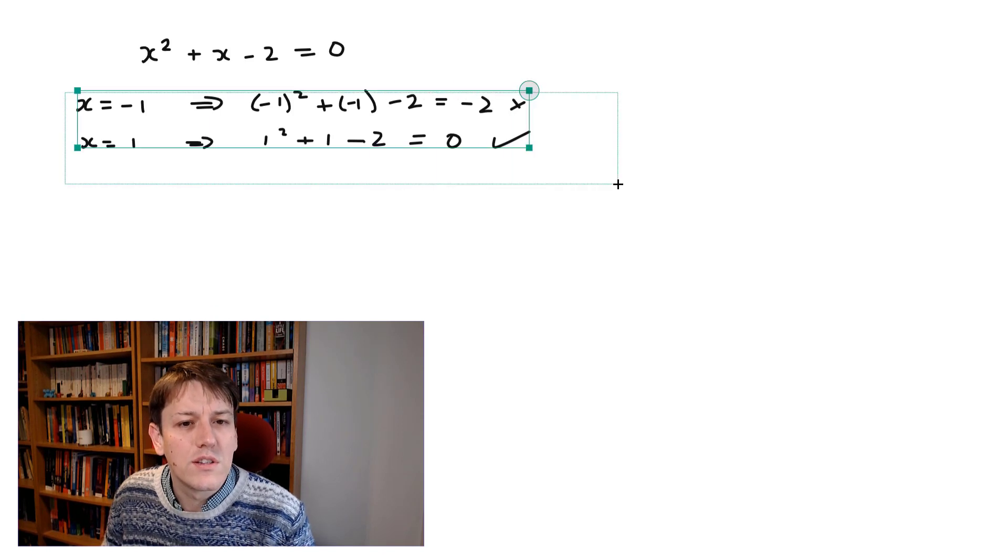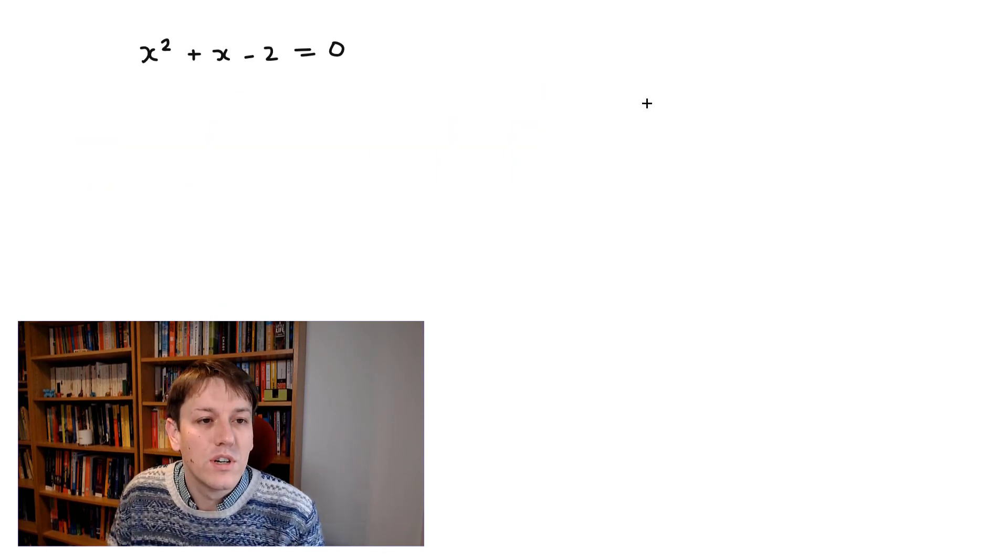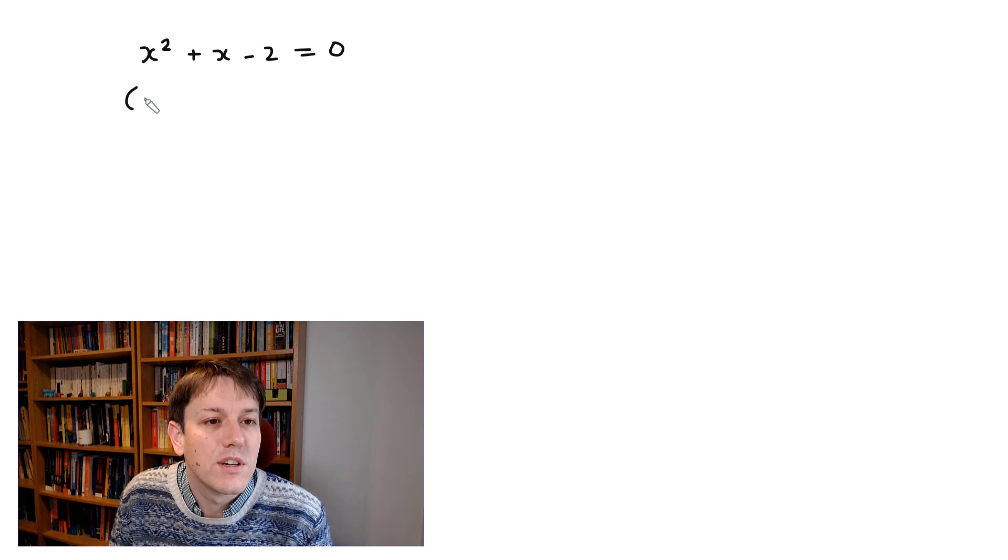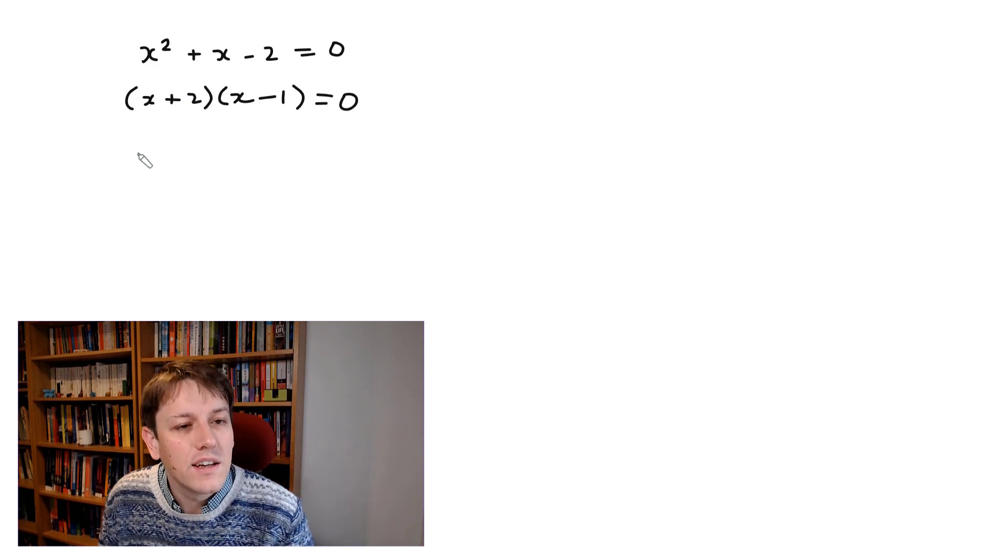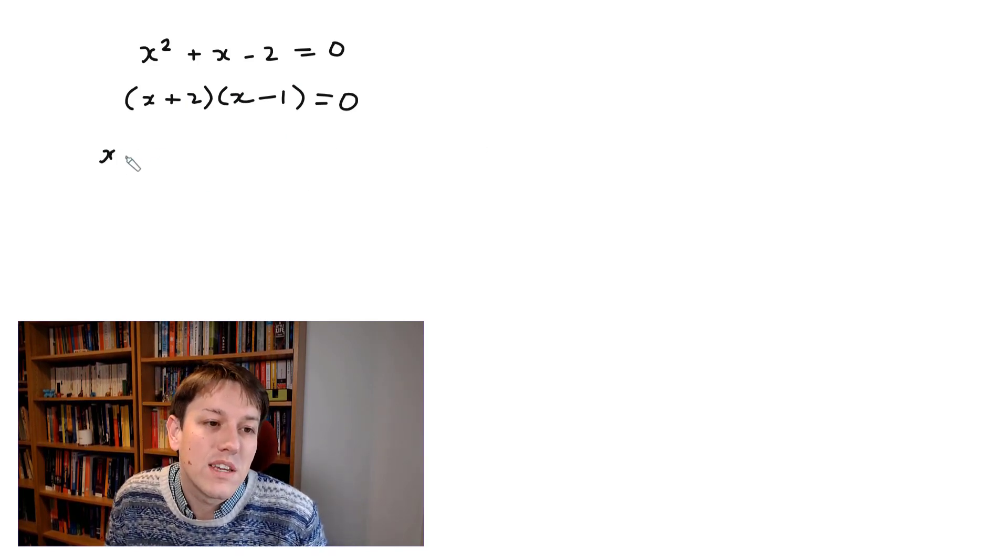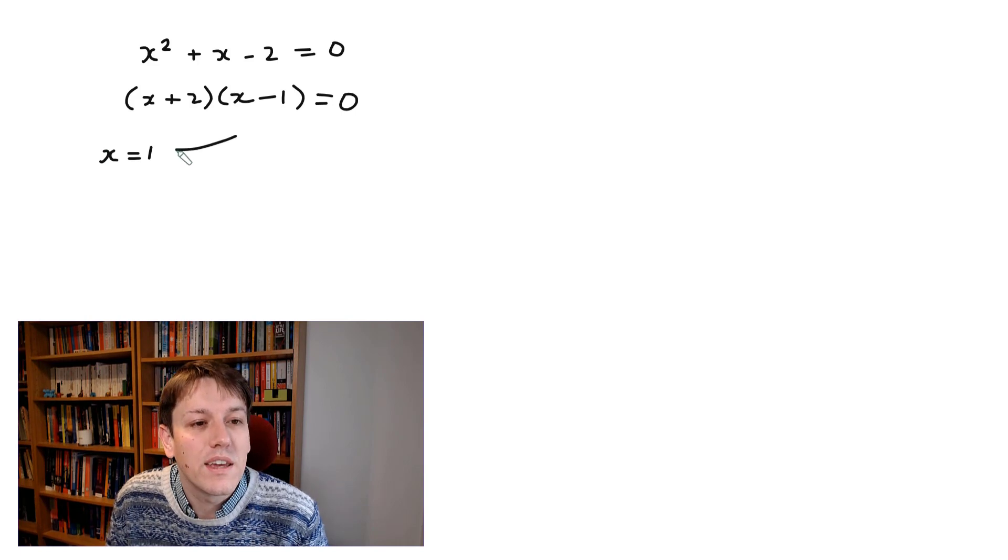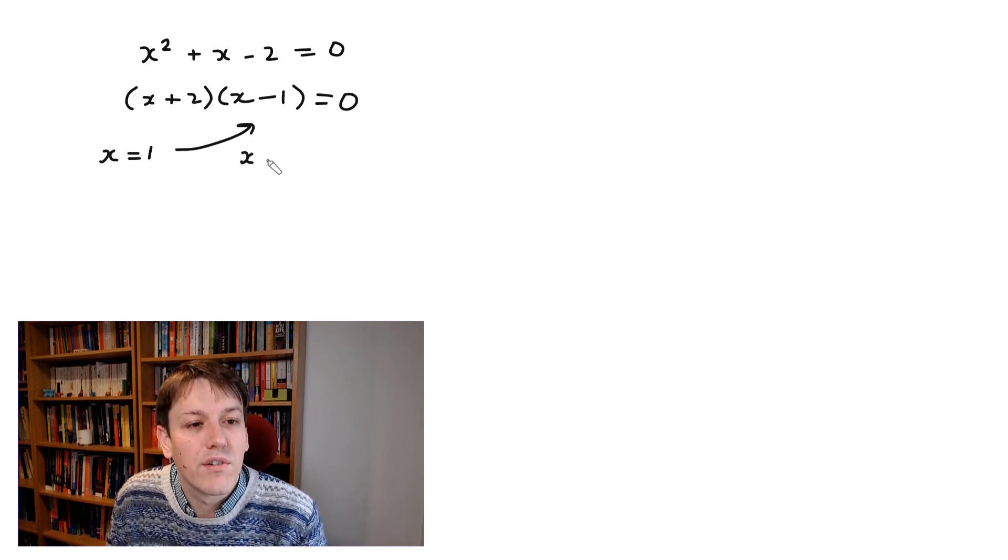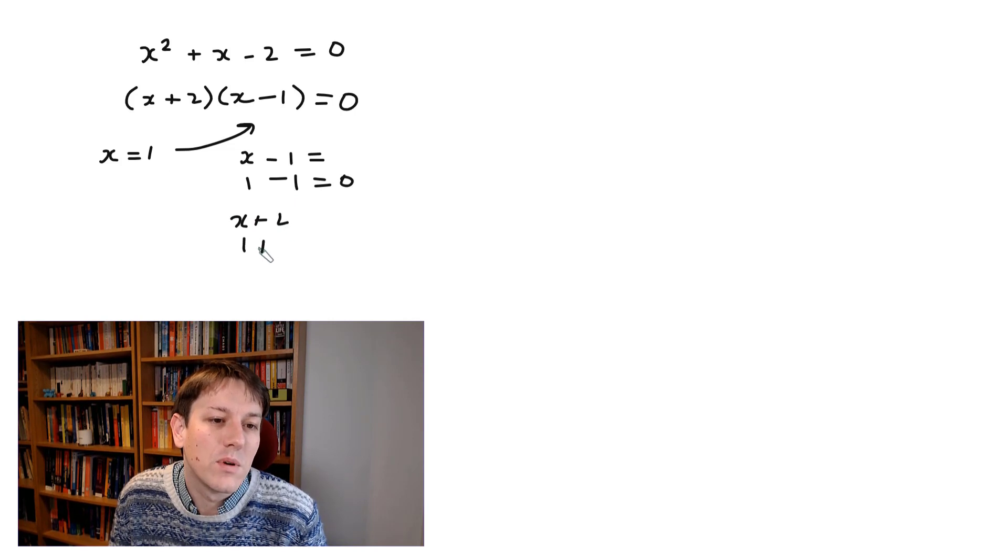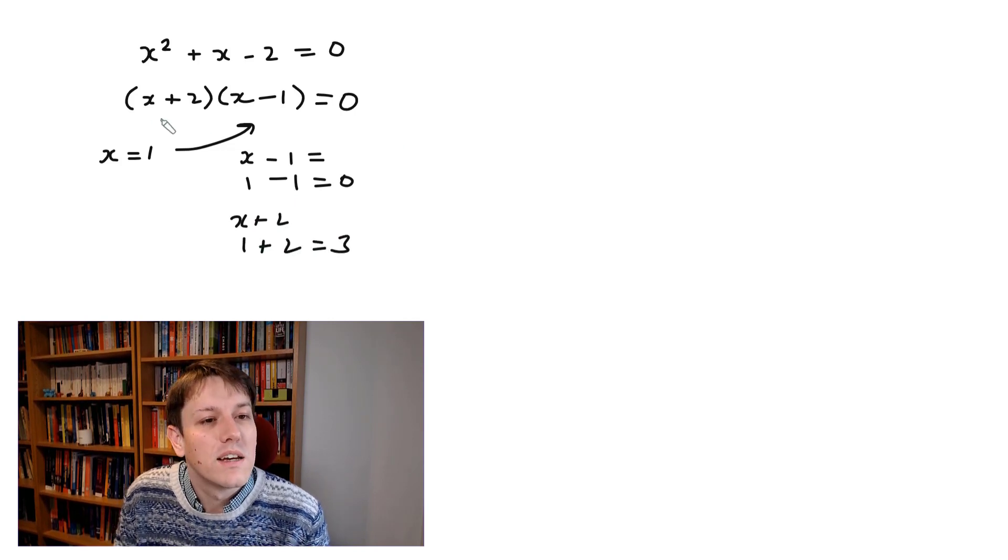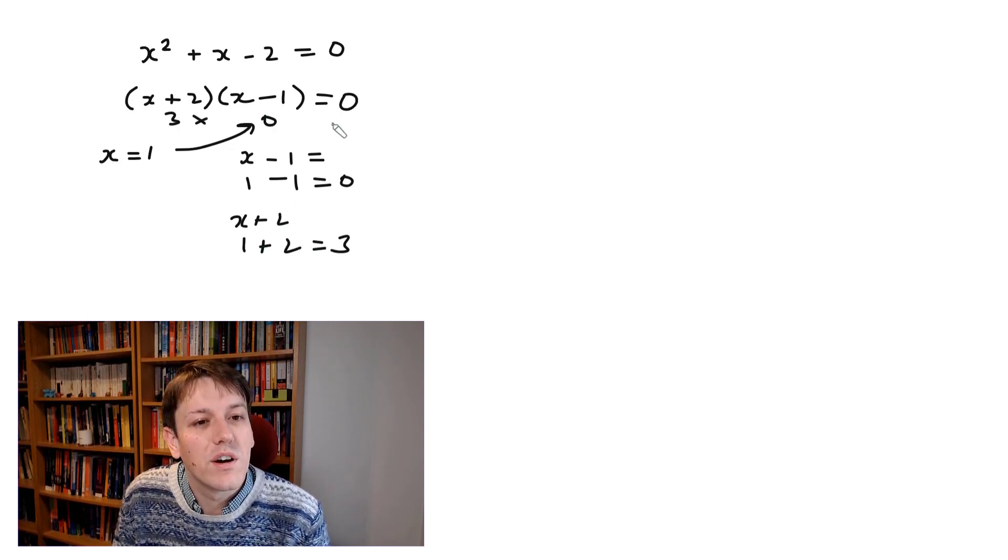But if I take x = +1, then 1² + 1 - 2 is 0, and that one is a solution to the equation. And the point here is, solutions to equations are much easier to spot once we're in this factored form. Because if I have, instead here, (x + 2)(x - 1) = 0 again, I can just see that much more easily. If I substitute in x = 1 here, it makes this bracket 0. x - 1, when x is 1, is 1 - 1, which is 0. Now, x + 2 would be 1 + 2, which is 3, and then I get 3 times 0 = 0.